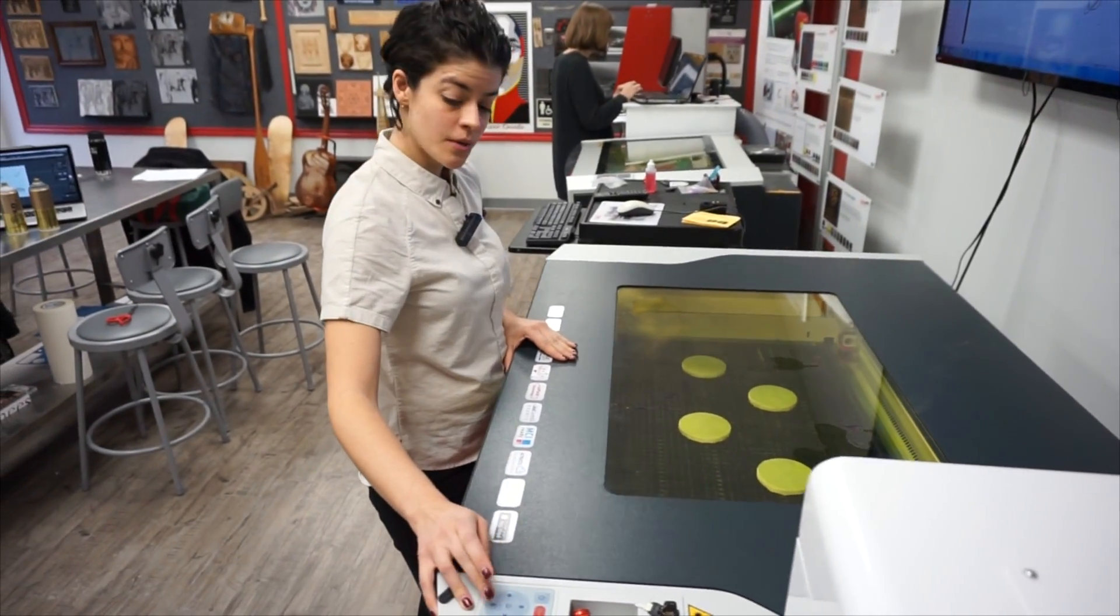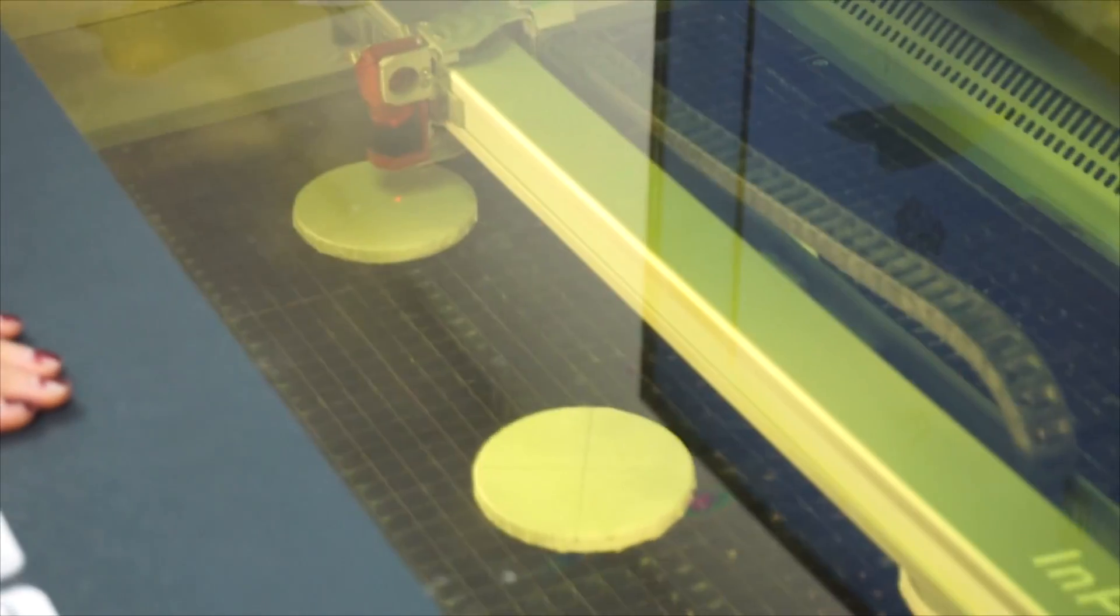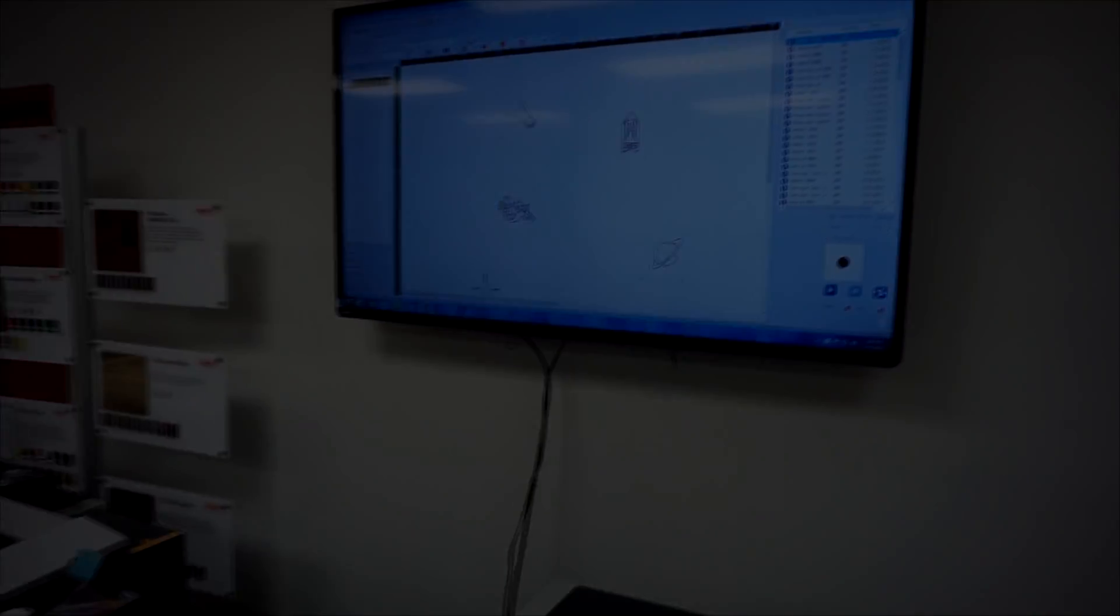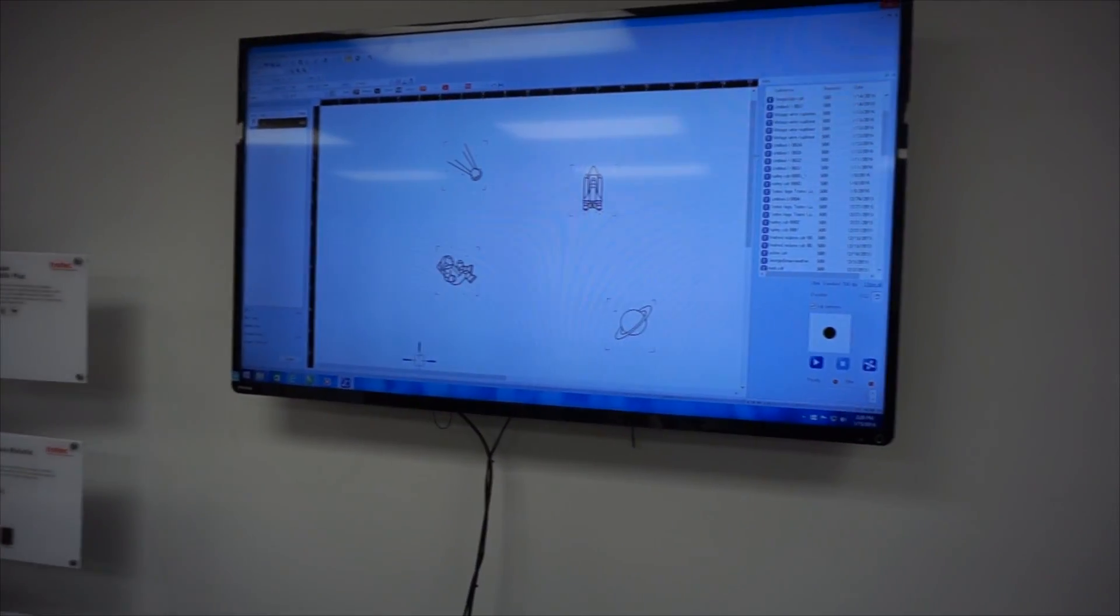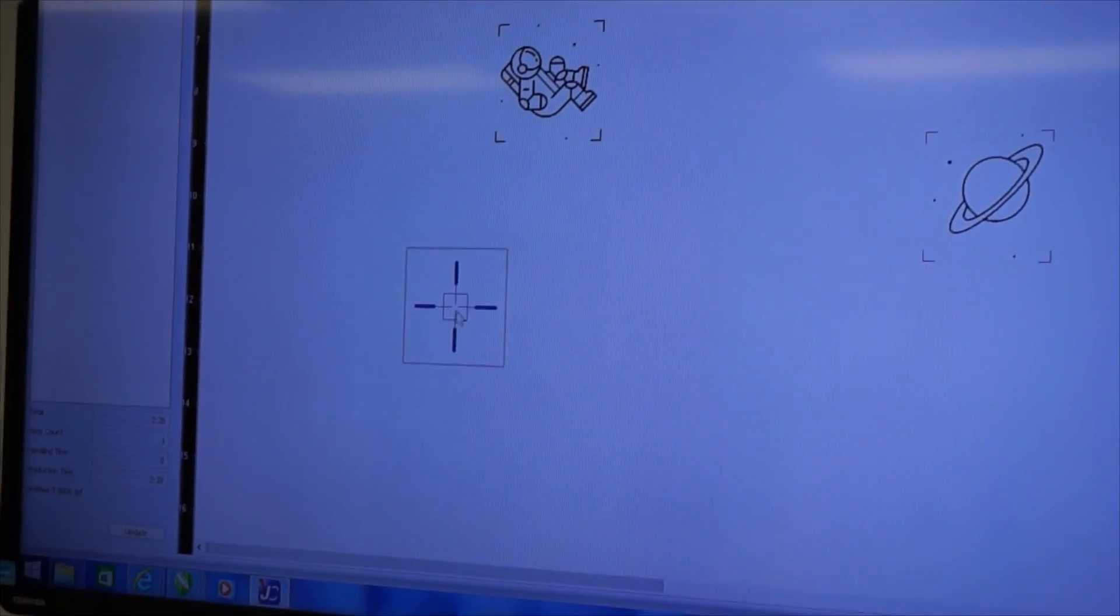So what you want to do is you want to take your laser and position it over one of the center marks of your first coaster. So there we go. Over here in job control, you want to take your first image and snap it to center.